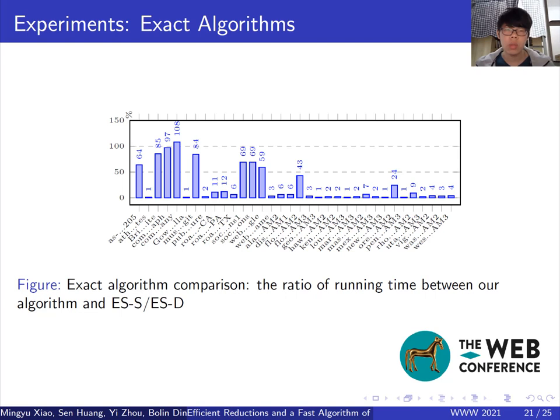This experiment shows the efficiency of exact algorithms. Here we use 34 hard instances that can be solved in one thousand seconds. As you see, our algorithm can significantly solve most instances in less time.